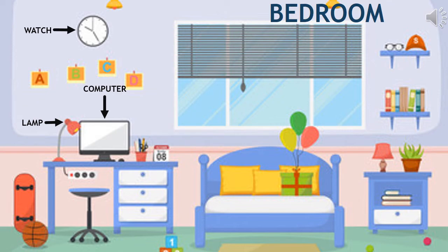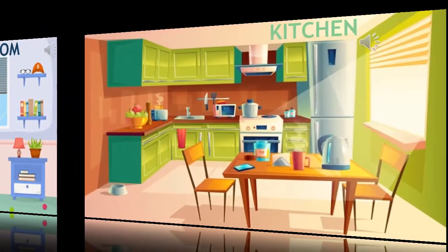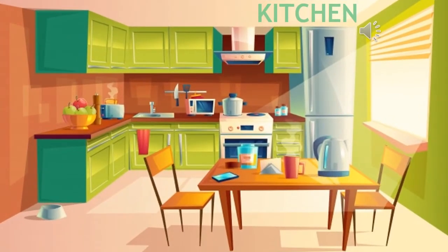Now let's go to my kitchen! This is my kitchen — I really like cooking. Do you know, when I'm cooking my daughter always comes asking me because she's interested in what I'm doing. Can you tell me what are the things that need electricity to work in the kitchen? That's right — there are toaster, kettle, oven, and fridge.